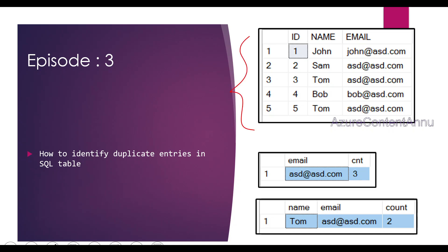Here is our table called Customer Table, where we have three columns: Customer ID, Name, and Email. The ID column has unique records — there are five records and they have unique values because it is a primary key column. If you notice the Name column, the entries are John, Sam, Tom, Bob, and Tom. So the value Tom has been repeated.